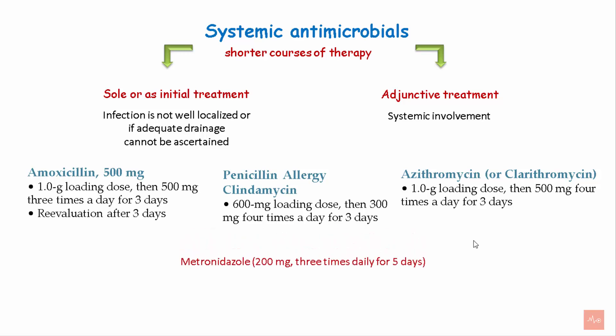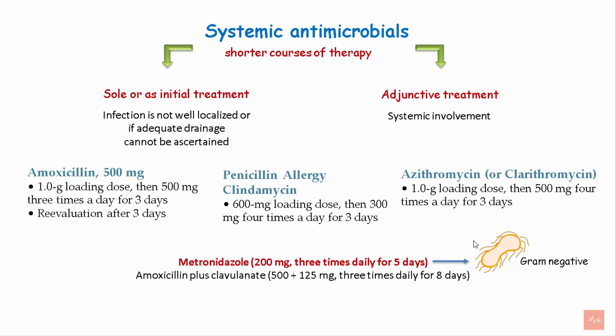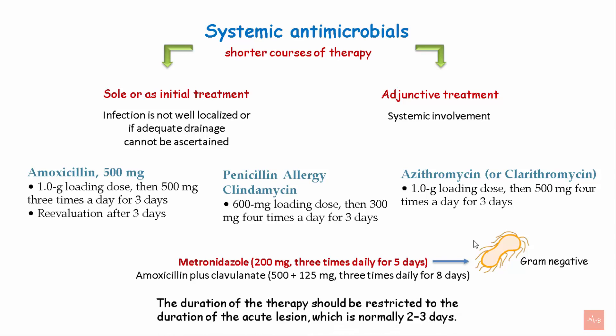Metronidazole has been seen to be effective against periodontal abscess because it is effective against the gram-negative microorganisms present in the periodontal abscess. A combination of amoxicillin and clavulanate has also been effective. It should be remembered that the duration of therapy should be restricted to the duration of the acute lesion, which is normally 2–3 days.